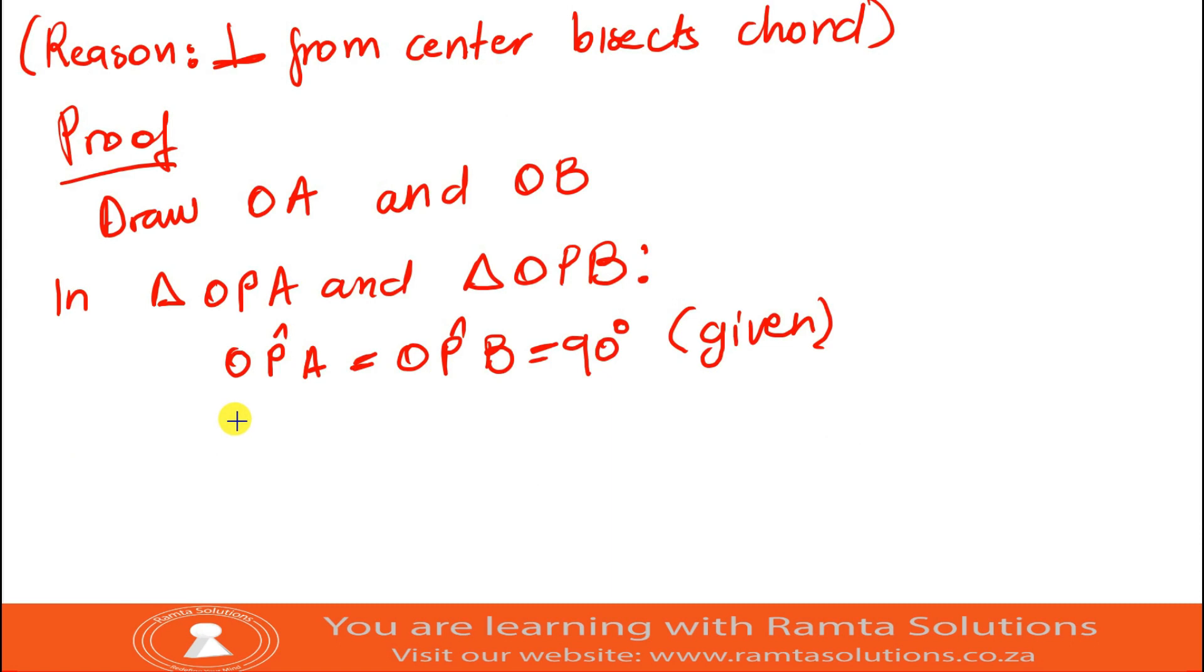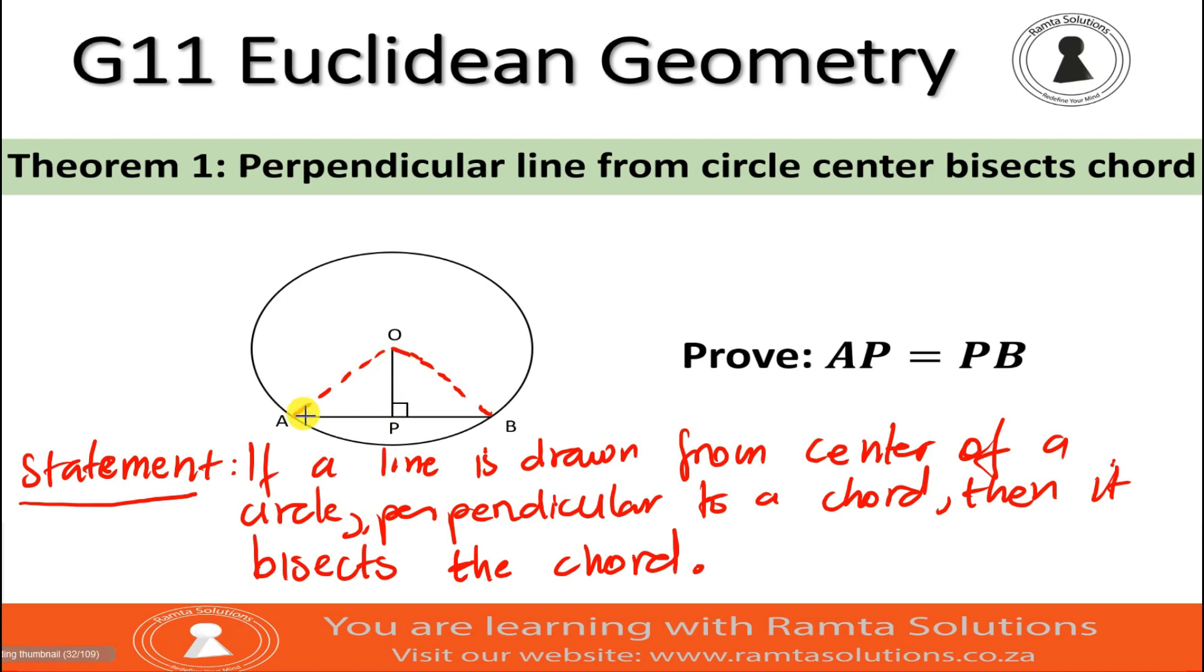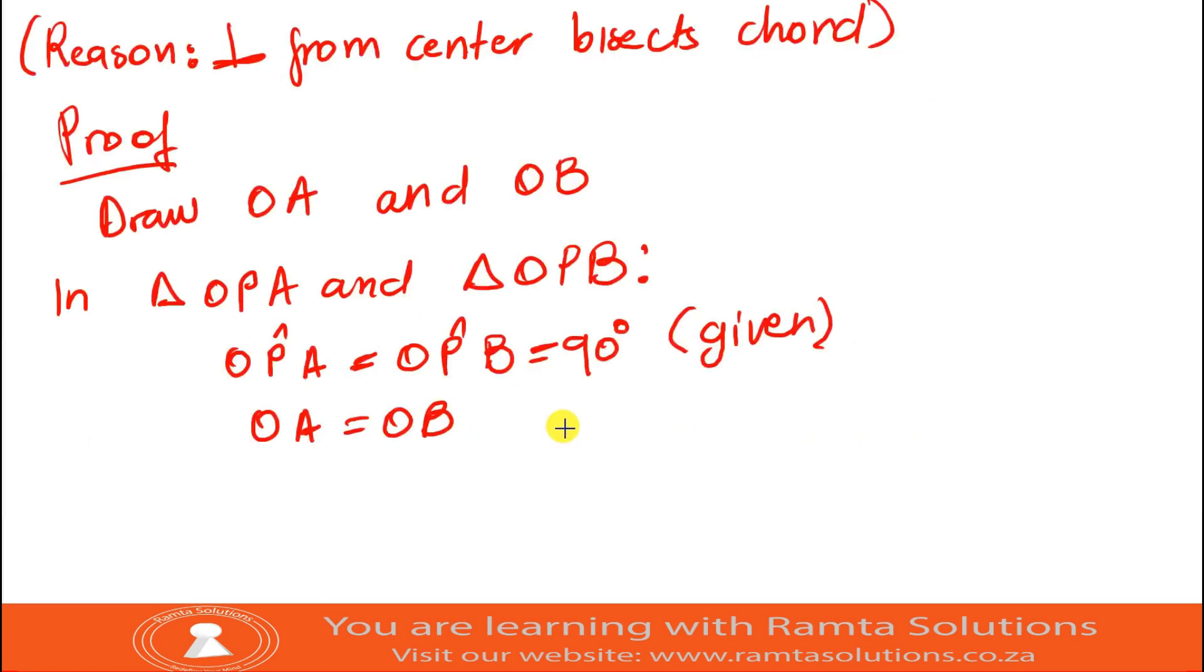Now, we have side OA. Side OA is equal to side OB. I want you to look at it. OA is equal to OB. What is the reason? OA is a radius. Same applies to OB. So, the reason is equal radii.